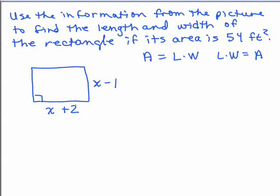Looking at our picture, the length times the width equals the area. So the length, x plus 2, times the width, x minus 1, equals the area, which is 54. The dimensions are in feet and the area is in square feet.